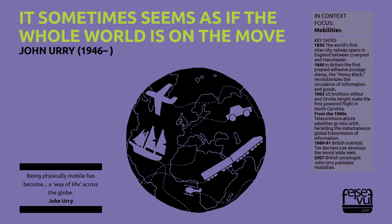Systems and Mobilities. Urry's primary contribution to the study of globalization is his focus on the social systems that facilitate movement. The 20th century, in particular, saw the emergence of cars, telephones, air power, high-speed trains, communications satellites, networked computers, and so on. These interconnecting mobility systems are the dynamic heart of globalization, says Urry.